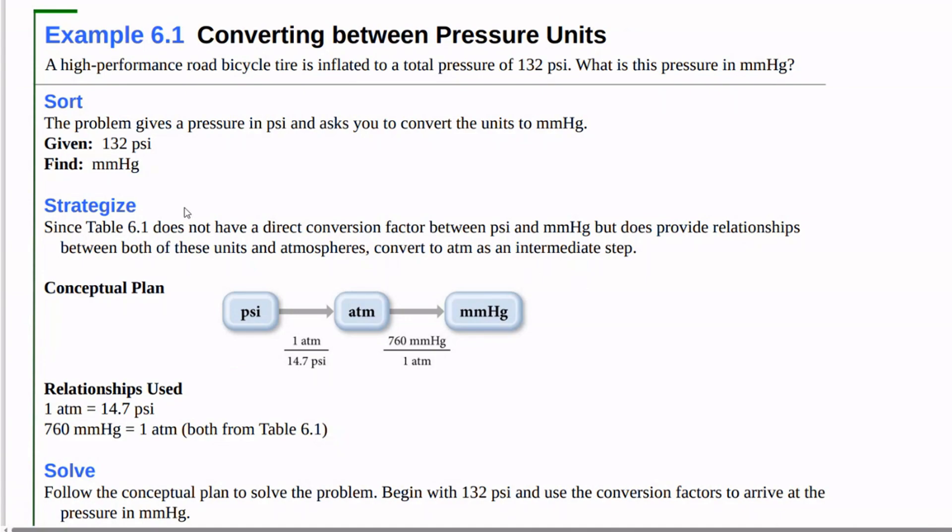We have to use two conversion factors from table 6.1 because we don't have a direct conversion from PSI to millimeters of mercury. So we know that one atmosphere is 14.7 PSI and 760 millimeters of mercury is one atmosphere. So we can convert from PSI to atmospheres to millimeters of mercury.